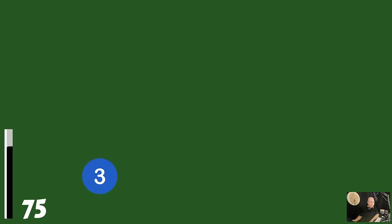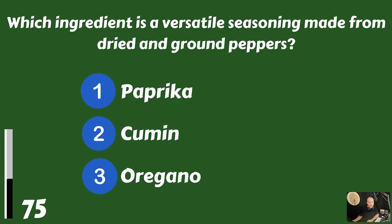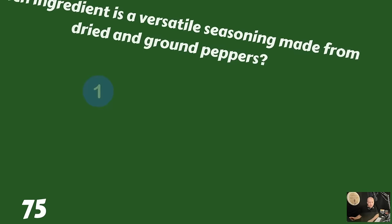Which ingredient is a versatile seasoning made from dried and ground peppers? Paprika, cumin, or is it oregano? That would be paprika.